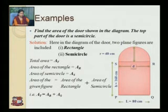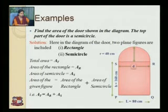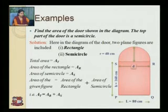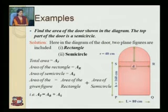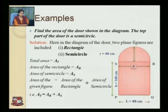The total area will be obtained by adding the area of the rectangle and the area of the semicircle, which gives the total area of the diagram. So total area AT is equal to area of rectangle AR plus area of semicircle AS. That is AT equals AR plus AS.